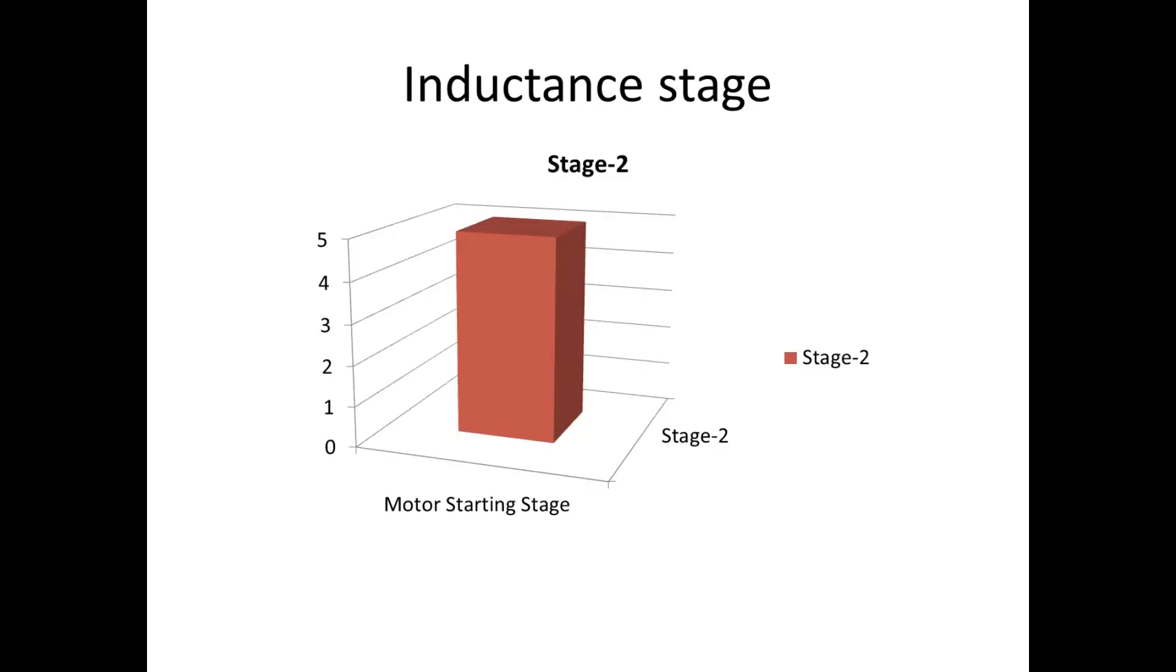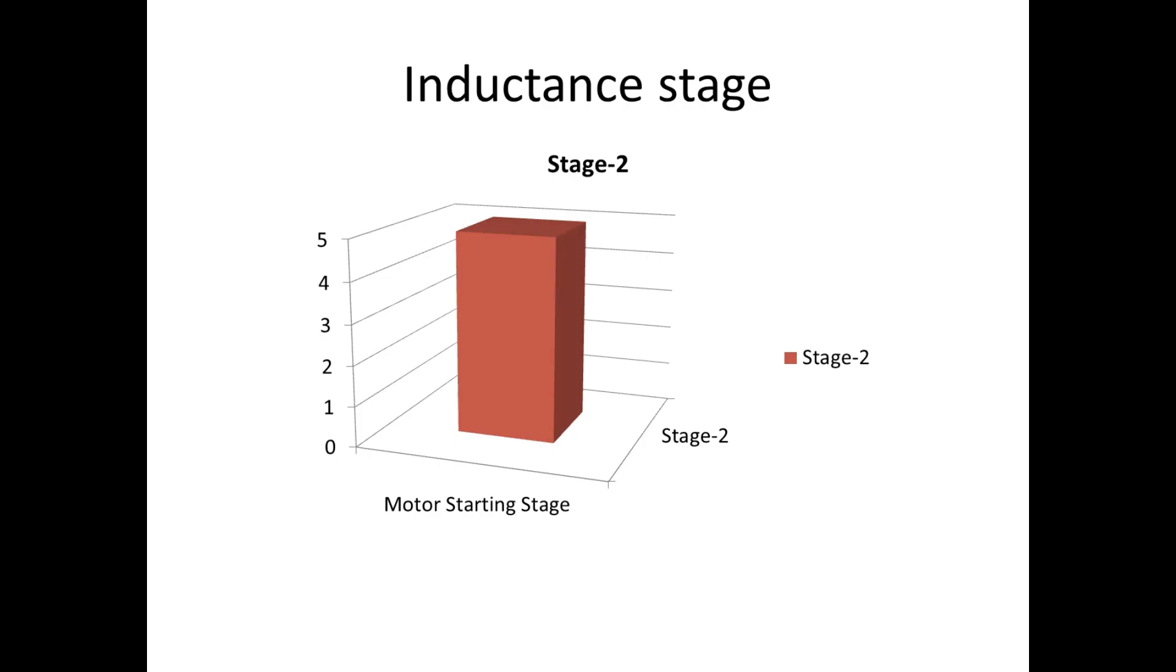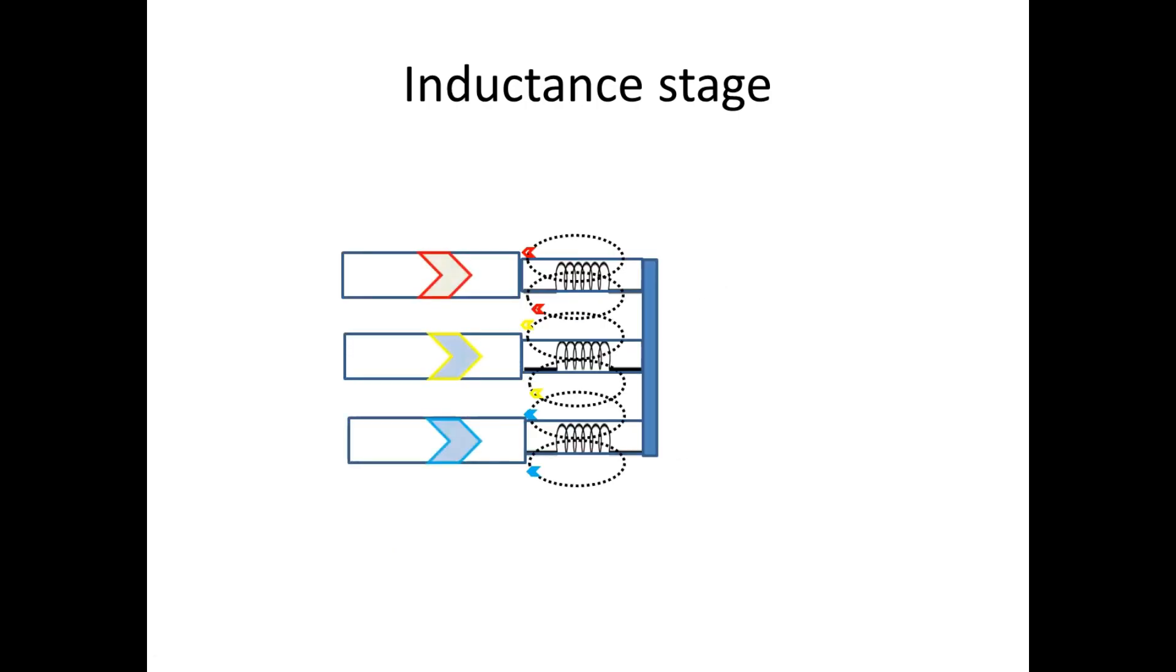Now we move to stage 2. After very high current, now the coil realizes its nature and it starts to behave as an inductance and produces flux. Due to this flux, the resistance of the current flow is increased, so the current starts to reduce. This stage is quite large.